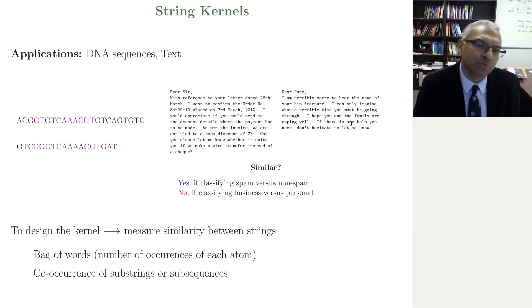Now your kernel can be based on the input, which is bags of words. But the first thing you have to ask yourself is, for my application, are these two pieces of text similar? And if you are classifying spam versus non-spam, they are similar. Because neither of these are spam. One is business and one is about personal, but neither of them are spam.